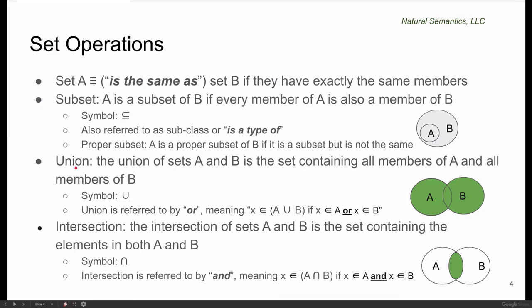The next operation is union. The union of sets A and B is a set containing all members of A and all members of B. The symbol is a capital U. In terms of Venn diagrams, if we have sets A and B, then everything that is inside of A or inside of B is the union of A and B. Union is referred to by OR because X is a member of A union B if X is a member of A or X is a member of B.